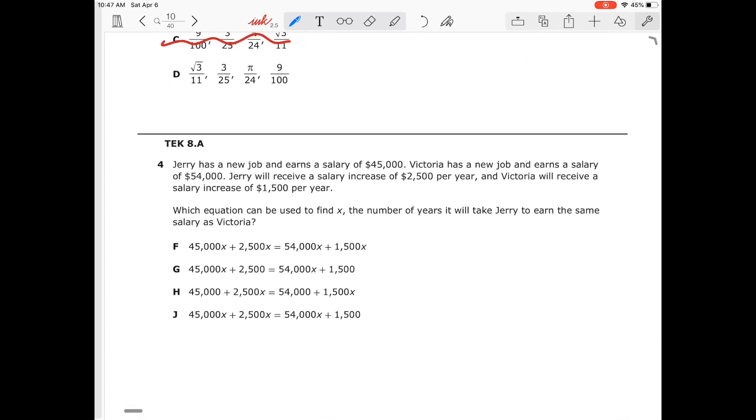All right. Number four. So Jerry has a new job and earns a salary of $45,000. And then Victoria has a new job and she's earning $54,000. So she's making more money than Jerry. But each year, Jerry receives $2,500X, X representing the year. And then Victoria is going to receive only $1,500 per year.